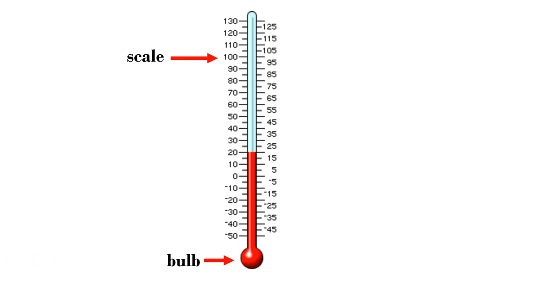The scale measures the temperature. The two common liquids inside the scale that go up and down as the temperature changes, as you can see in this thermometer, are alcohol and mercury.